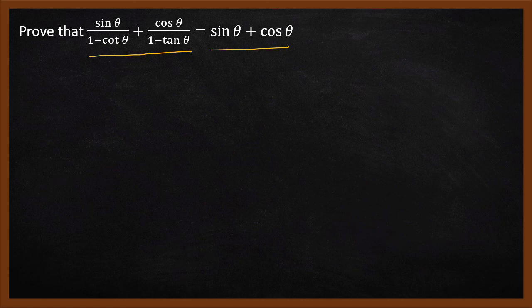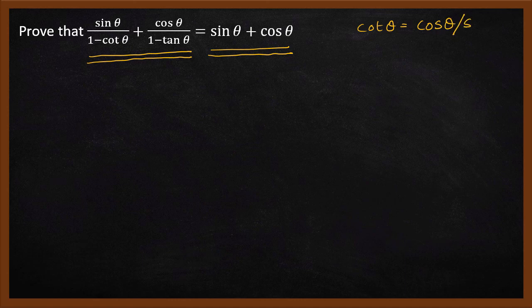The first thing you will notice is the right hand side has sine and cos, and the left has sine, cos, cot, and tan. My suggestion — typically for these kinds of problems — is to replace cot theta by sine and cos. Cot theta is given by cos theta divided by sine theta, and tan theta is given by sine theta divided by cos theta.